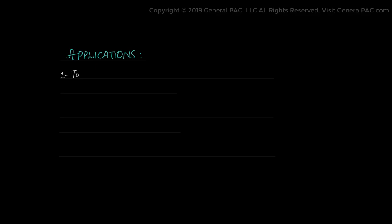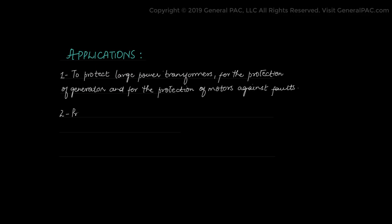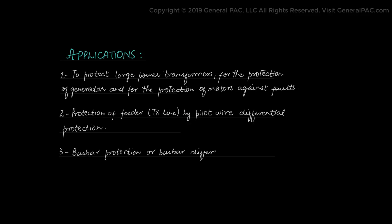Some applications for a current differential relay include protection of large power transformers, protection of generators, and protection of motors against faults and short circuits. Another application is protection of feeder or transmission lines by pilot wire differential protection, or communication assisted differential protection. Another application is bus bar protection or bus differential protection.